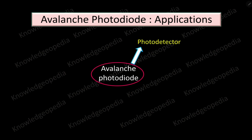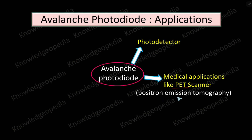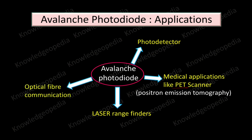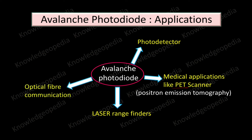Avalanche photodiodes are used as photodetectors. They are also useful in medical applications like PET scanners — positron emission tomography — which is useful for cancer treatment. They are also used as laser range finders. The most important application includes optical fiber communication. They are further useful in laser scanners. These are some of the applications of the avalanche photodiode.